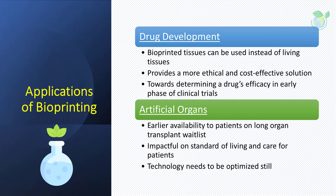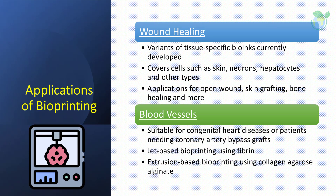The next two applications are wound healing and blood vessels. Variants of tissue-specific bio-inks are currently being developed, covering cells such as skin, neurons, hepatocytes, and other types. With ongoing evaluation and trials, it opens up possibilities for applications in open wounds, skin grafting, bone healing, and many more potential uses. Blood vessels are small functional vessels with capillarized diameters, suitable for nutrient and oxygen delivery along with waste removal, as well as vascular grafts that may be used for congenital heart diseases or coronary artery bypass grafts. Bioprinting addresses this gap using two approaches: jet-based bioprinting using the structural protein fibrin, and extrusion-based bioprinting using collagen, agarose, and alginate as the structural materials.